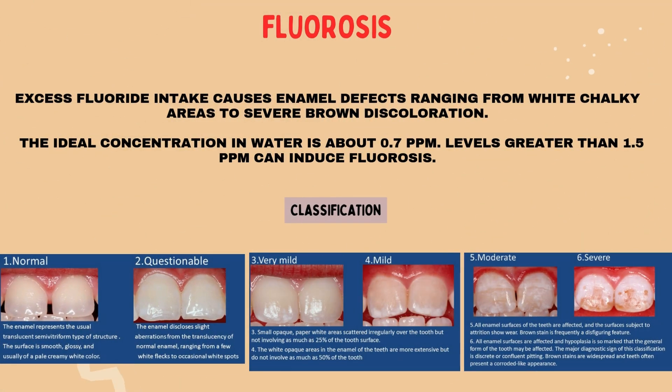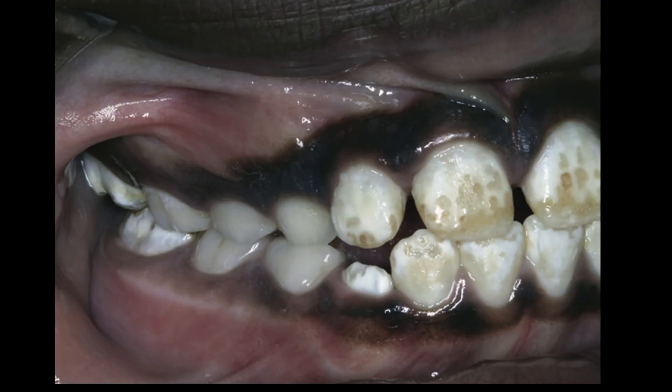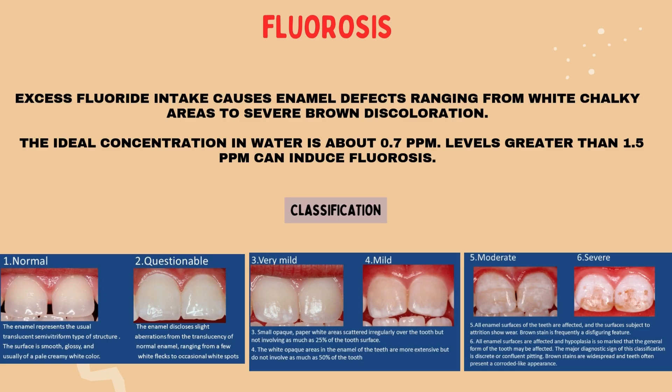Fluorosis: excess fluoride intake causes enamel defects ranging from white chalky areas to severe brown discoloration, making enamel prone to fracture. The ideal concentration in water is about 0.7 to 1 part per million. Levels greater than 1.5 parts per million can induce fluorosis. Clinical features: defects vary from white lines, pits, or grooves to severe malformations.